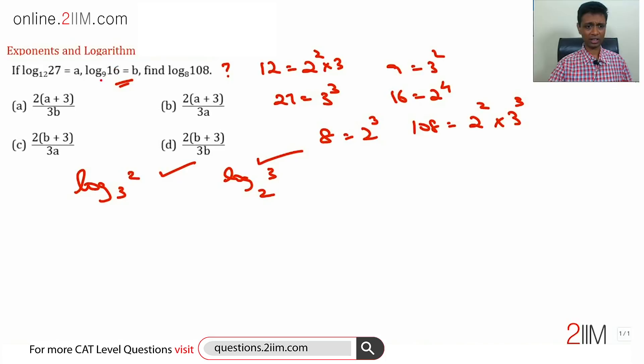I want to start with this because 16 and 9 are both powers of 2 and 3 uniquely. Let's simplify that. Log 16 to the base 9 is b, log 16 by log 9 to any base is b.